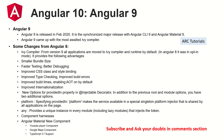Angular 9 was released around February 2020 as a synchronized major release with Angular CLI 9 and Angular Material 9. The Ivy compiler was introduced, resulting in faster testing, better debugging, improved CSS classes, and style binding improvements. New Angular Material components were added such as a YouTube Player and Google Maps integration. From Angular 8 onwards, all AOT builds are enabled by default — you no longer need to specify a prod flag, as all production builds have AOT enabled.